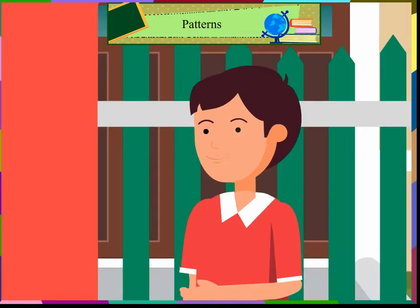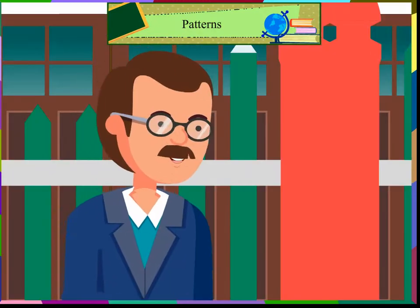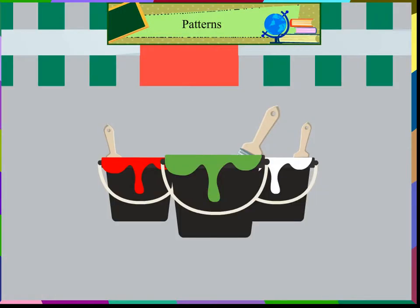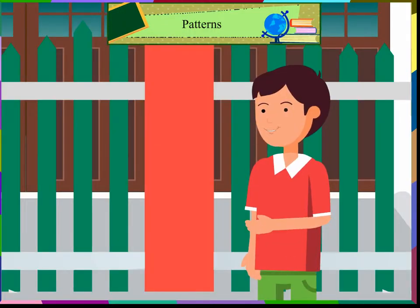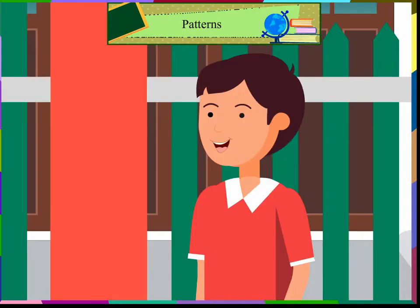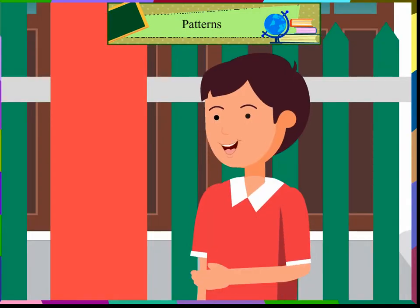Varun asked, 'Pattern? What does that mean?' His father explained, 'A pattern is a sequence that repeats. Look at the gate — white is painted first, then green, and then red. Again white, green, and red is painted.' Varun replied, 'Yes father, I understood the pattern. I will also paint the gate in the same pattern of colors.'